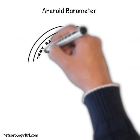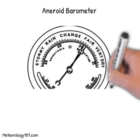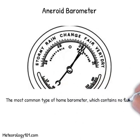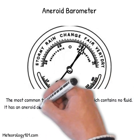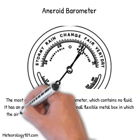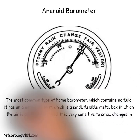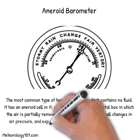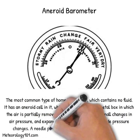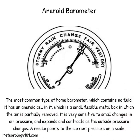An aneroid barometer is the most common type of home barometer, which contains no fluid. It has an aneroid cell in it, which is a small flexible metal box in which the air is partially removed. It is very sensitive to small changes in air pressure, and expands and contracts as the outside pressure changes. A needle points to the current pressure on a scale.